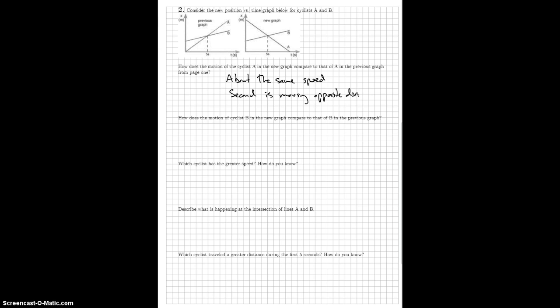So how does the motion of B compare? Here, they look about the same. Which cyclist has the greater speed? Since we think the speeds are about the same in both, it's A. It's steeper x versus t graph in both. So the velocities for the A riders are different because the directions are different, but the speeds are the same for the two graphs.